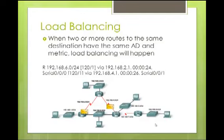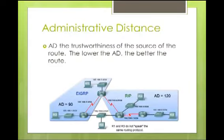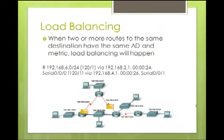To summarize, what a router looks at to determine the best path: first, administrative distance — whichever is lower, it will use that one. When both administrative distances are the same, it will look at the metric, such as hop count or bandwidth, depending on which routing protocol is in use. If the metrics also happen to be the same, then load balancing will kick in.